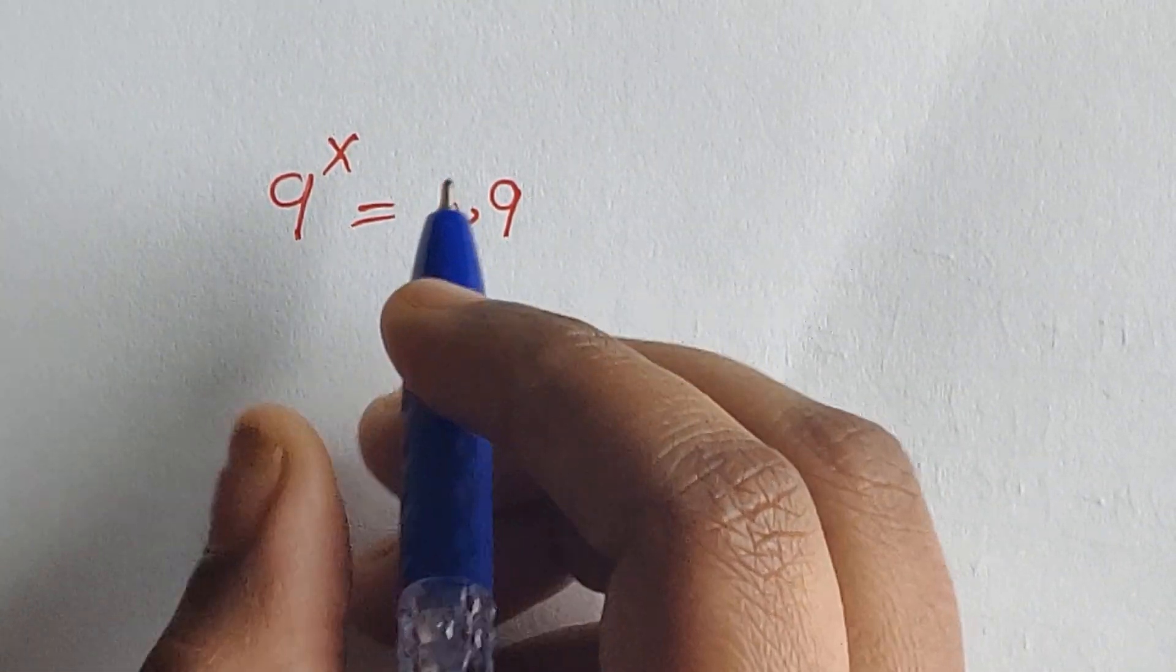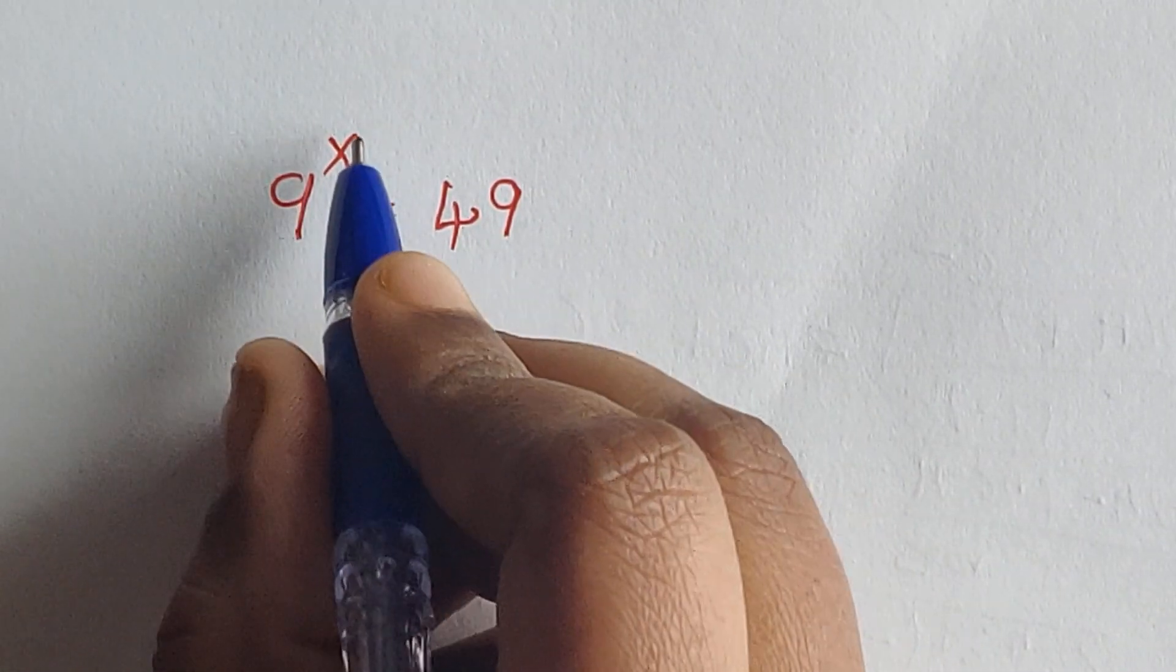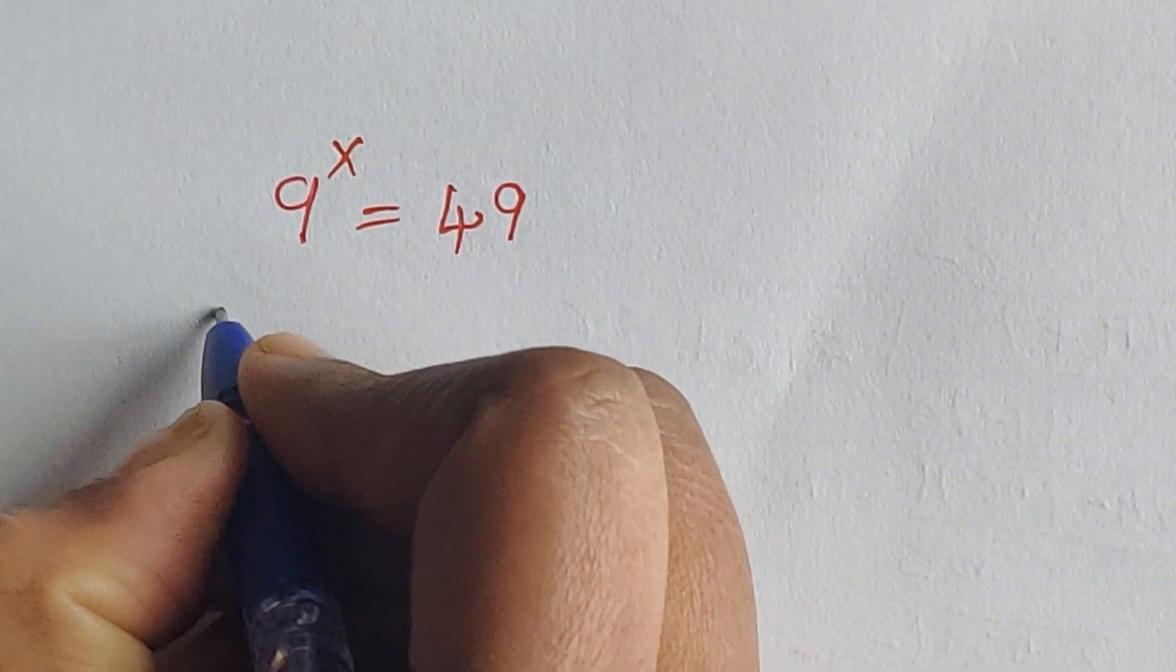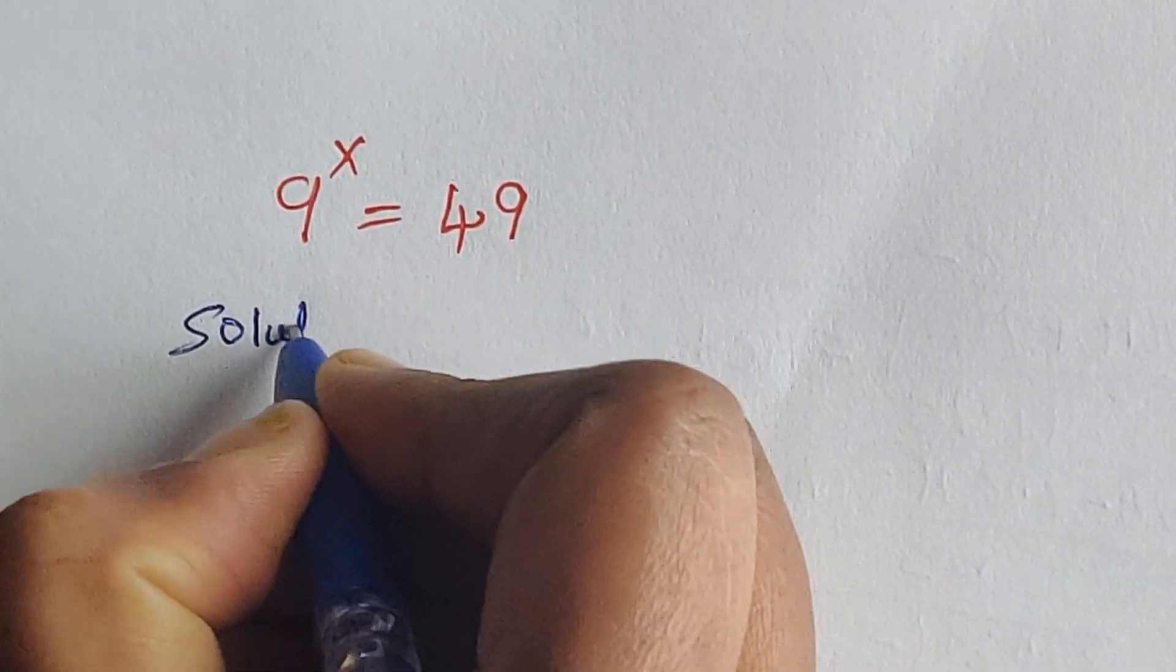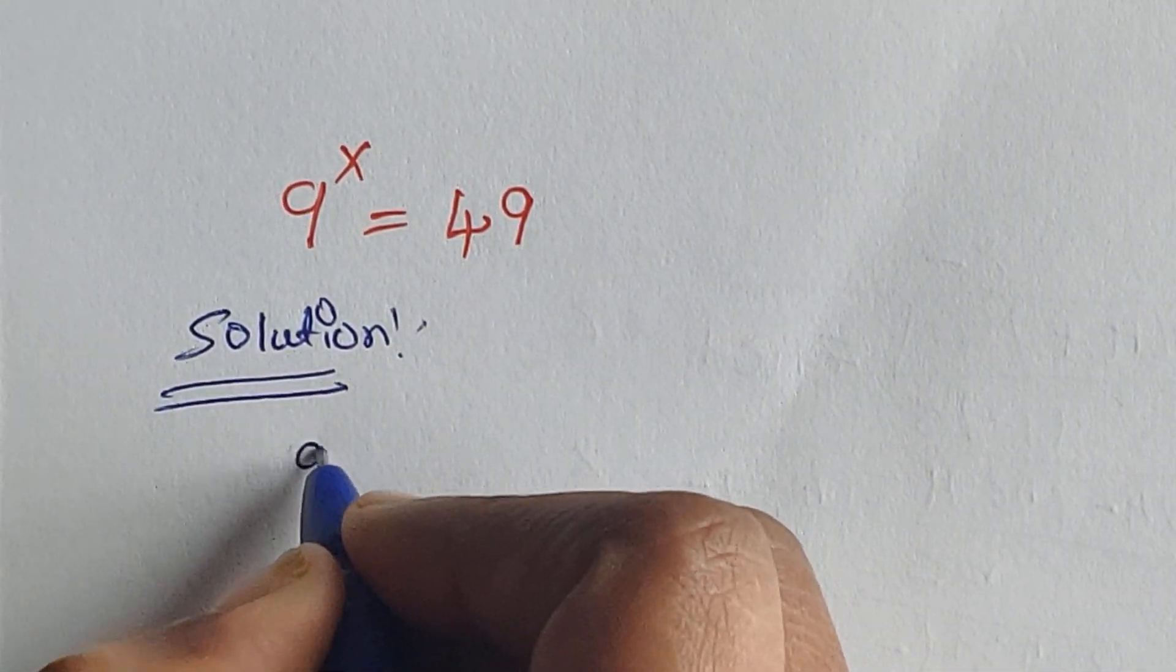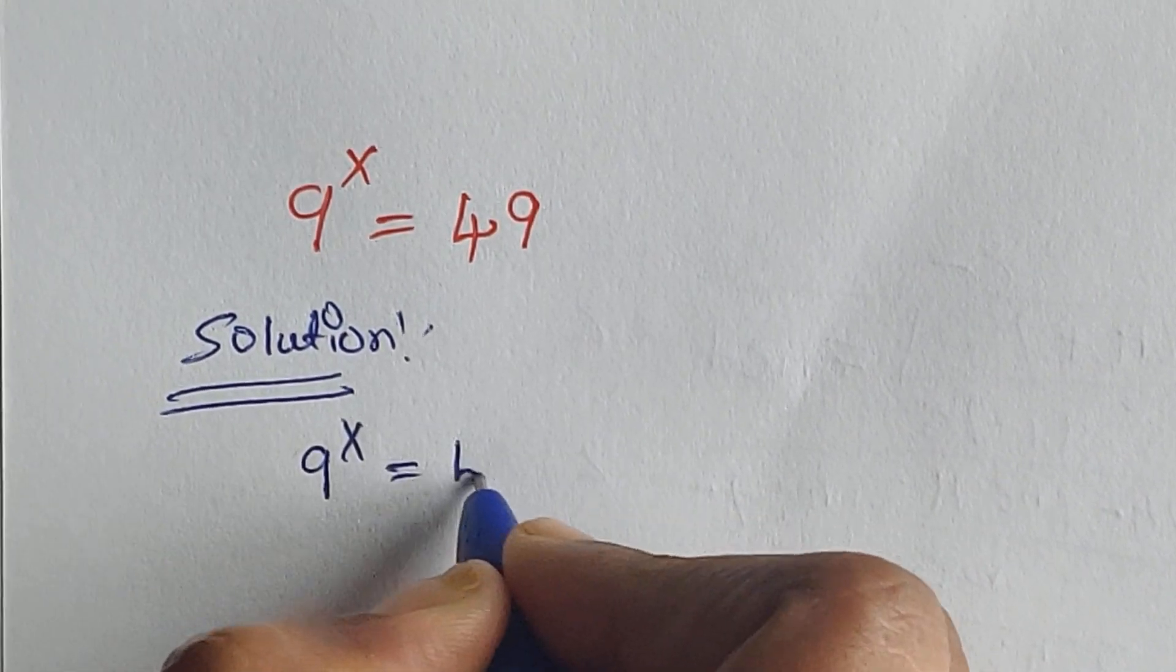Hello everyone, welcome back to our channel. Here we have one problem: 9 to the power of x equals 49. So how do we solve this? Let's see. 9 to the power of x equals 49.